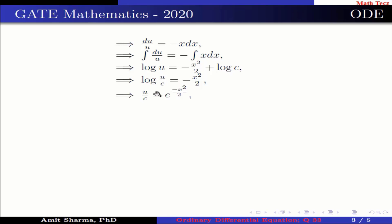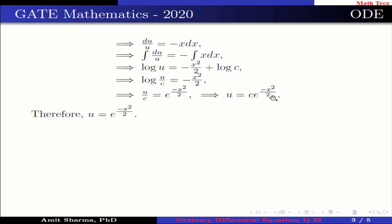Which implies u/c = e^(−x²/2), which implies u = c·e^(−x²/2). Therefore u = e^(−x²/2), where we take c = 1.